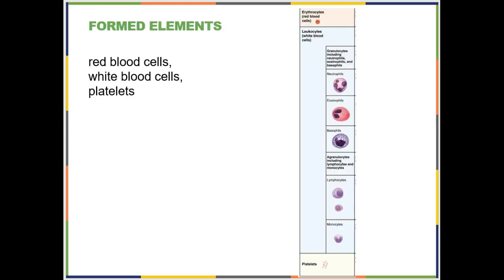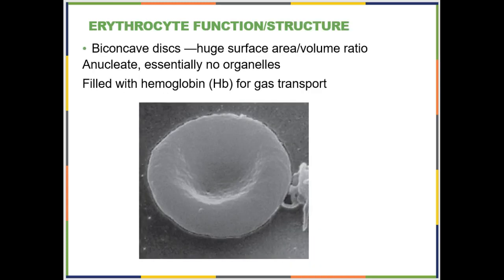Now we are on to the formed elements. We call them formed elements because platelets are not actually cells — they are cytoplasmic fragments of larger cells that stay in the bone marrow. That is why instead of saying blood cells we say formed elements. We're going to work our way through them, starting with erythrocytes.